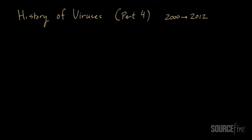Welcome to part four in my series on history of viruses. This is not just about traditional computer viruses but really about the way that malware in general has evolved. Viruses are one example of malware. In this fourth part of the series I'll talk about what happened between the year 2000 and 2012, and in particular there have been two big trends over this time.